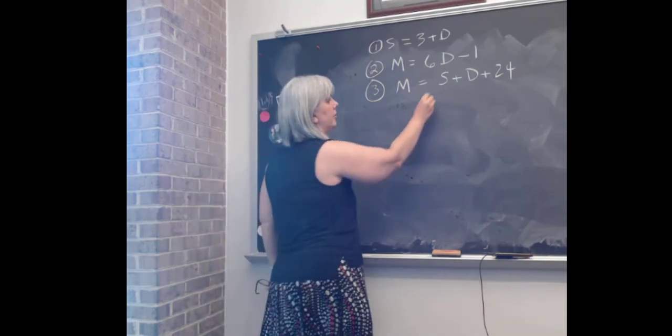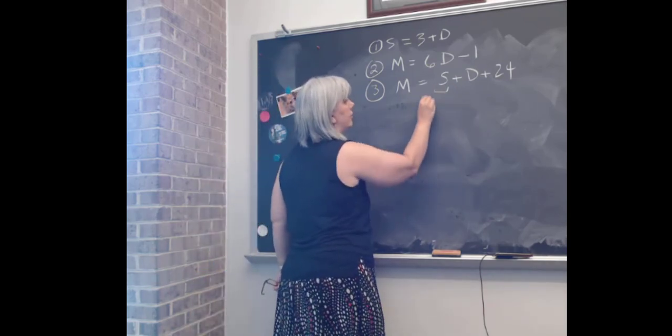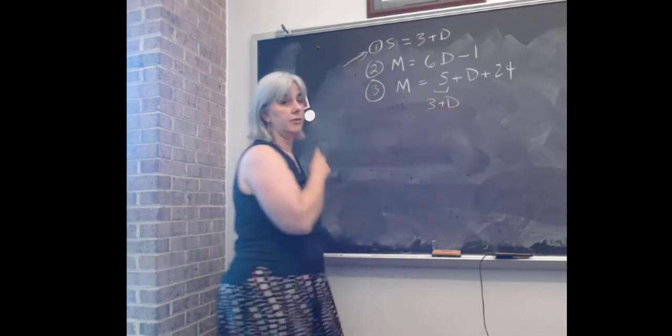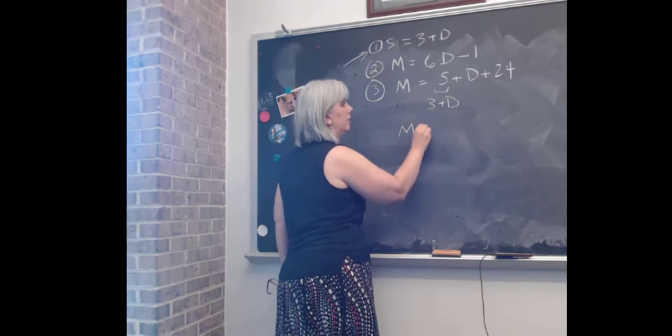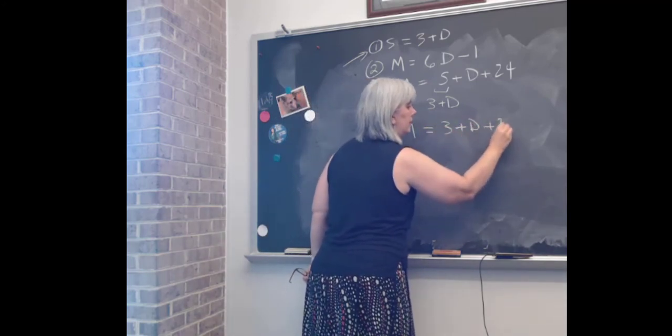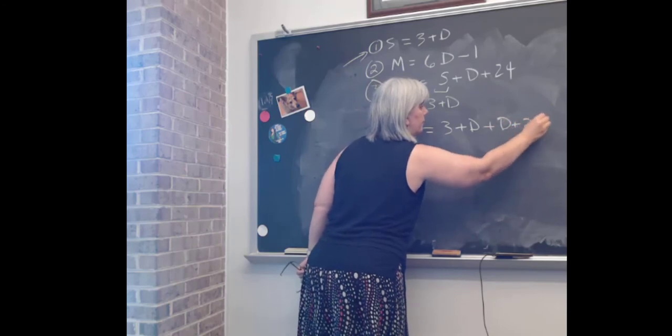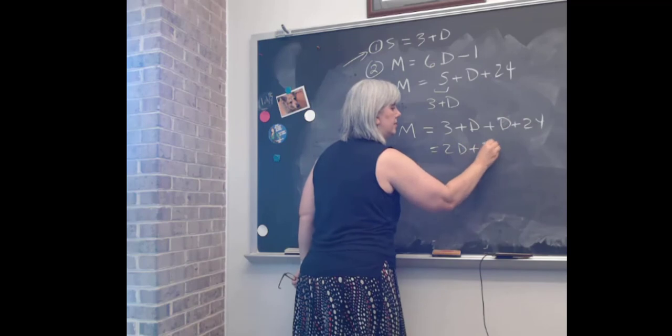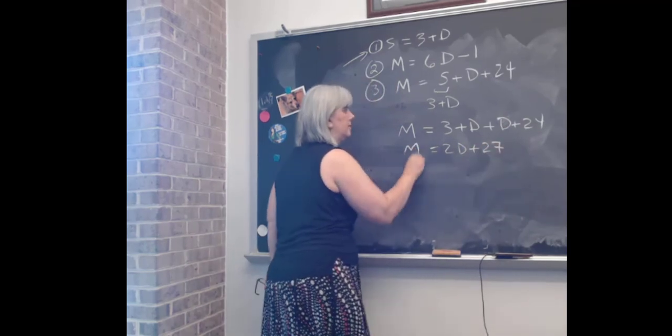So let's replace S with 3 + D. We can do this because of equation one up here. So I'll have M = 3 + D + D + 24. This works out to be M = 2D + 27.